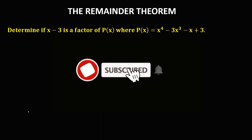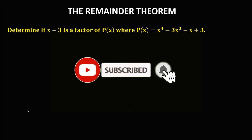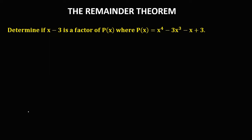Let's have this topic: the remainder theorem. We have this given — determine if x minus 3 is a factor of p of x, where p of x is equal to x to the power 4 minus 3 times x to the power 3 minus x plus 3. To solve this problem, we just need to equate x minus 3 to 0.